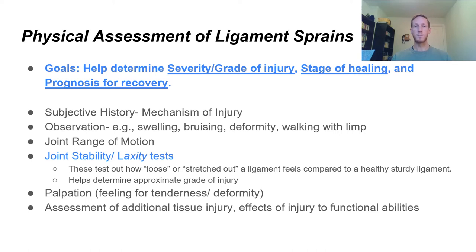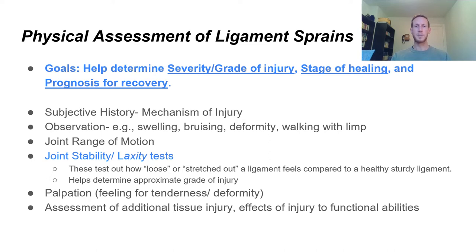We'll observe for swelling, bruising, potential deformity, and whether you're walking with a limp. We'll check joint range of motion. A key thing with ligament injuries is we'll always be doing joint stability or laxity tests — laxity meaning how tight the ligament is. This tells us how stretched out or loose the ligament has become after injury, and we compare it to the uninjured side. You'll feel us grabbing two bones and wiggling the joint. The findings help us determine the grade of damage and how long recovery will take.